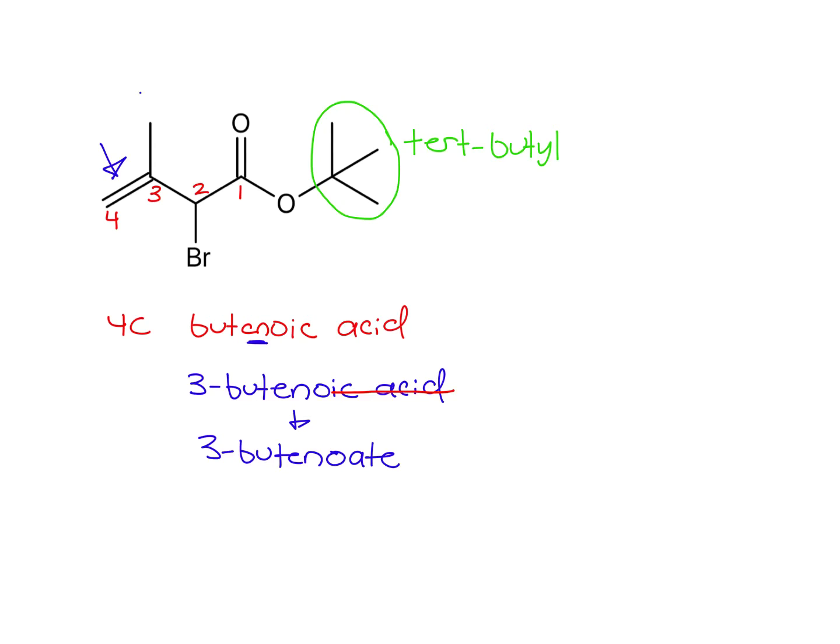So that would be 3-butenoate is the parent. Our substituents, we have a 3-methyl and a 2-bromo. So now, putting this all together to generate our name, we start with the R group. That's tert-butyl. Then we have bromo and methyl. B comes first alphabetically. So after our space, we do 2-bromo, 3-methyl, 3-butenoate.